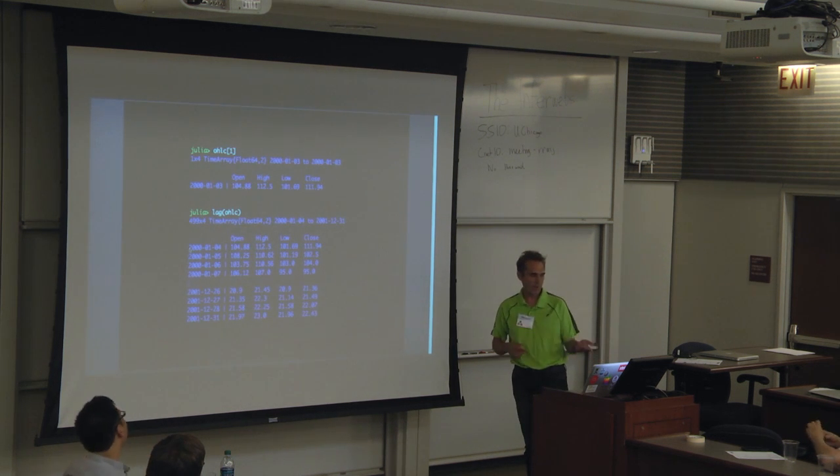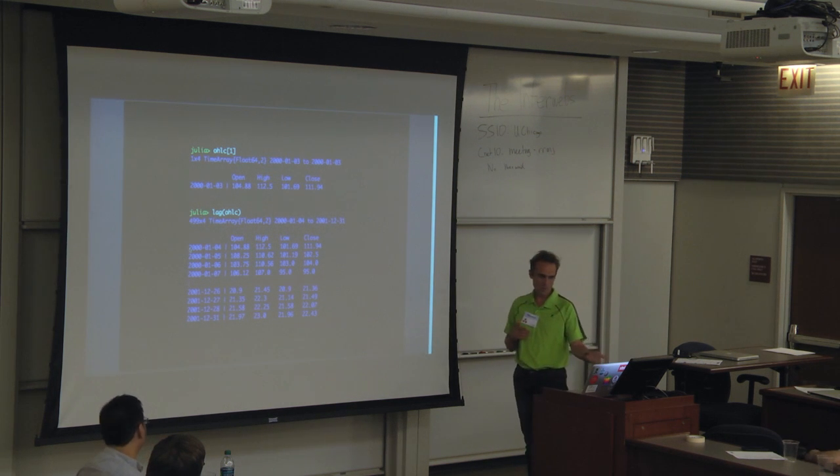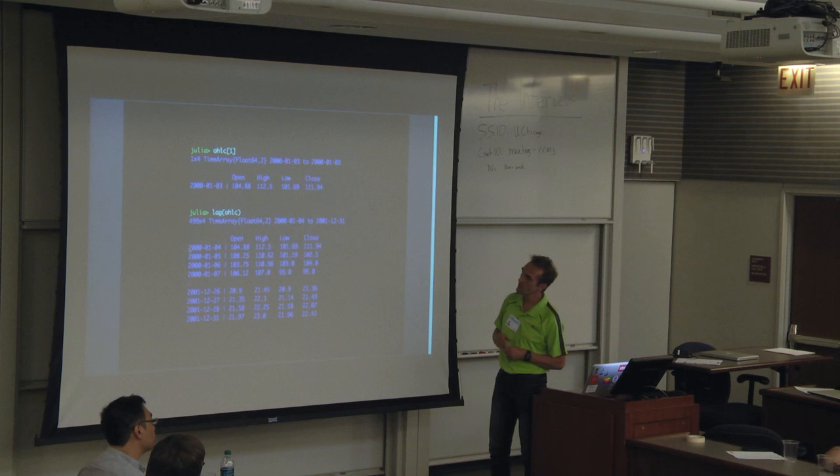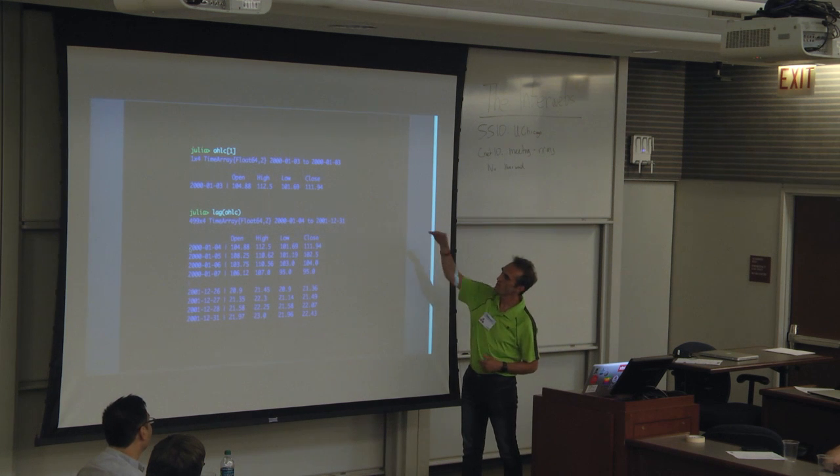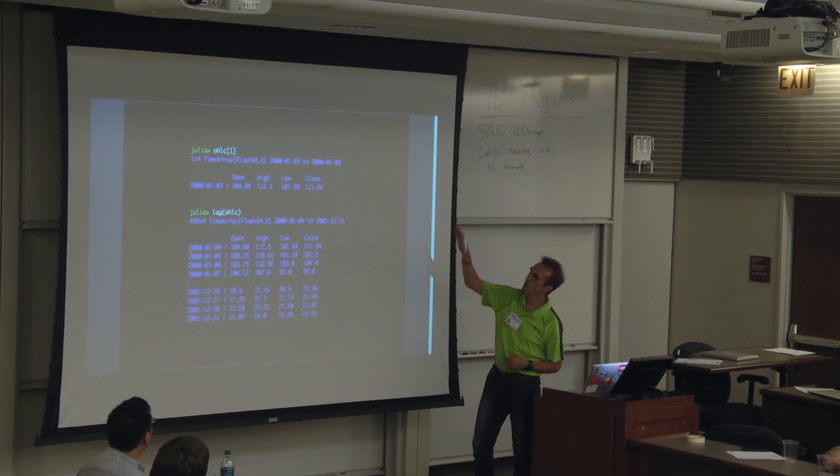But here's what happened. OHLC, remember, the first observation was, the open price was 104.88. You can see that. And then we lagged it, so we moved that first observation to the second date. And then we lost that first row. It's gone.